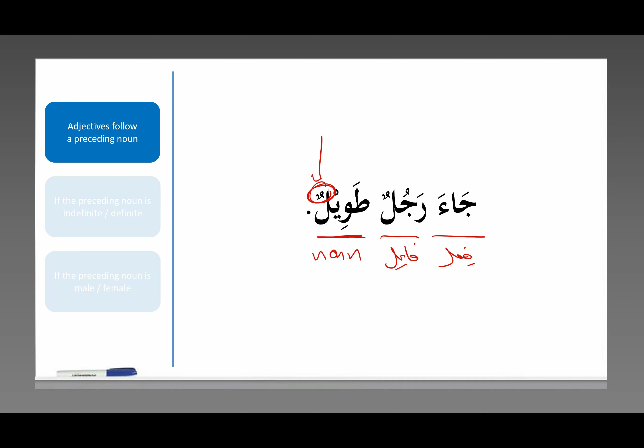Now, we know that in a جملة فعلية there is a fa'l and a fa'l. The noun that has the nominative case, حالة الرافع, is the fa'l. But now we have another noun that is also in the nominative case — this is sort of confusing. This is like when we looked at the conjunction, المعطوف, and the substitution, البدل, but this is not one of those. This is something else.